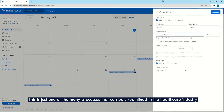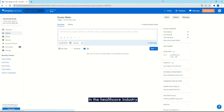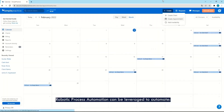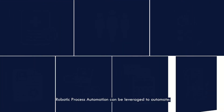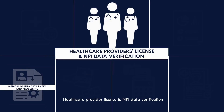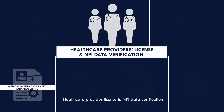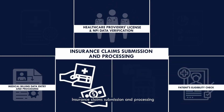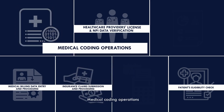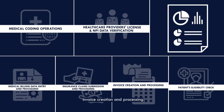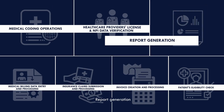This is just one of the many processes that can be streamlined in the healthcare industry. Robotic process automation can be leveraged to automate medical billing data entry and processing, healthcare provider license and NPI data verification, patient eligibility checks, insurance claims submission and processing, medical coding operations, invoice creation and processing, report generation, and more.